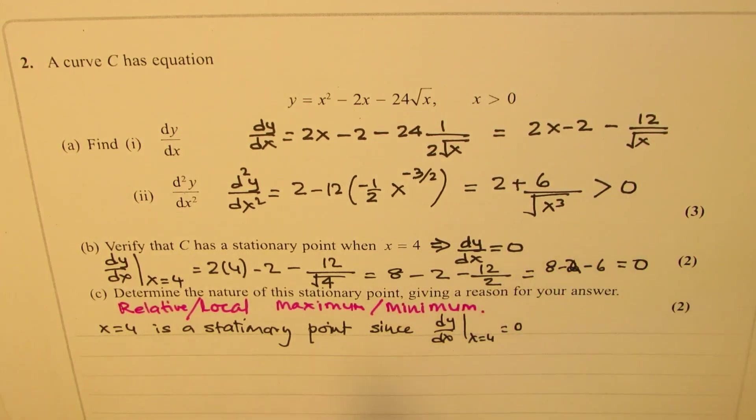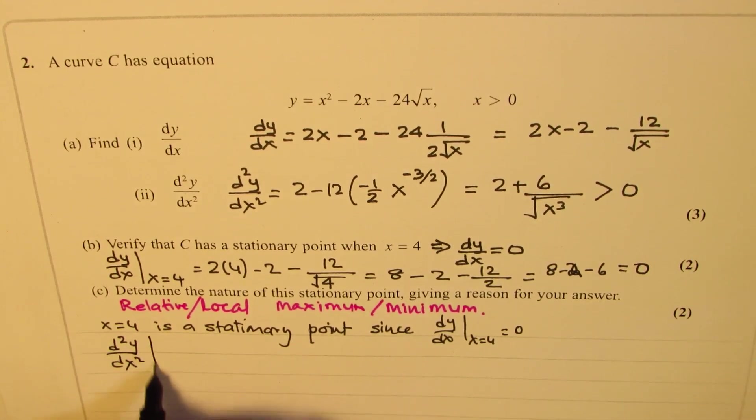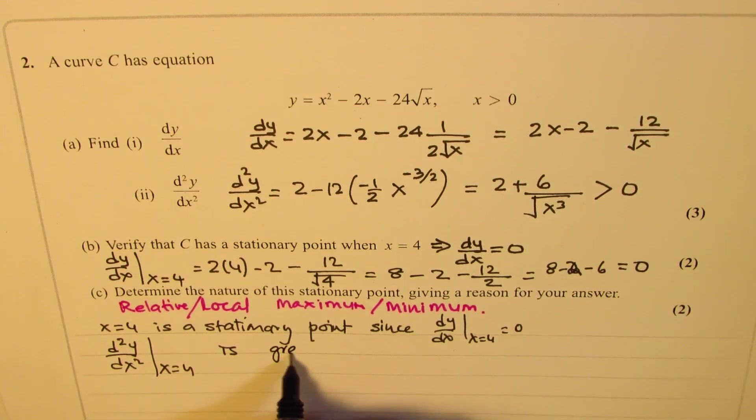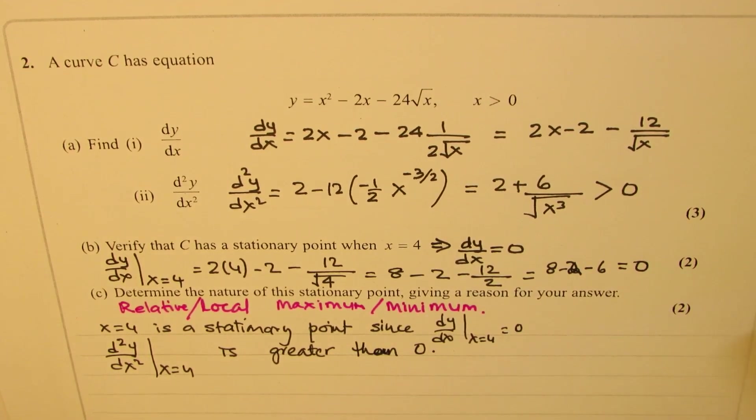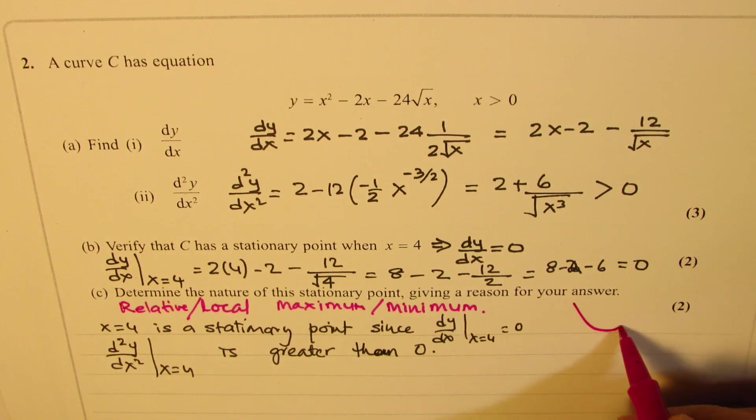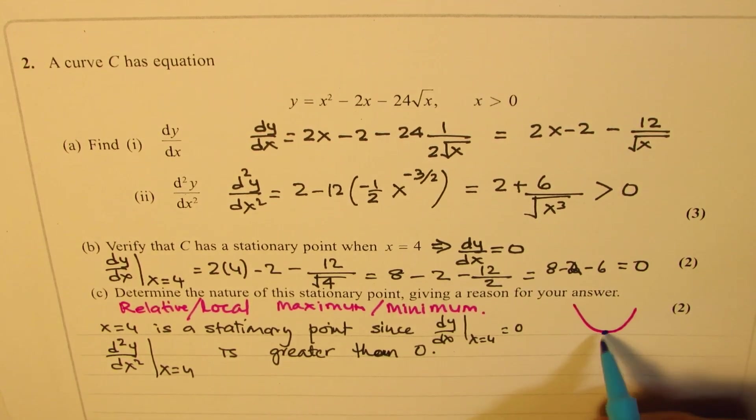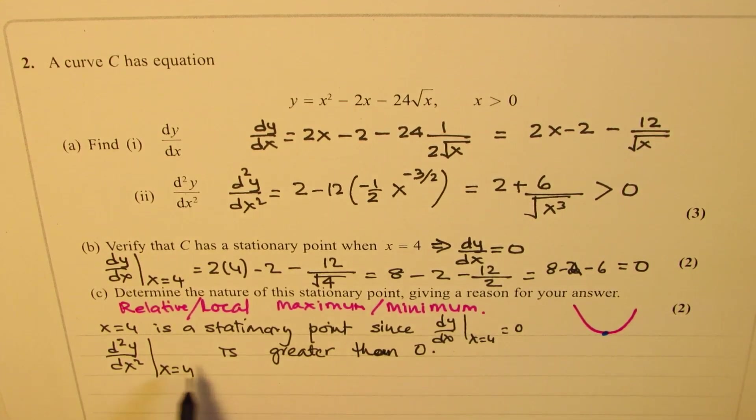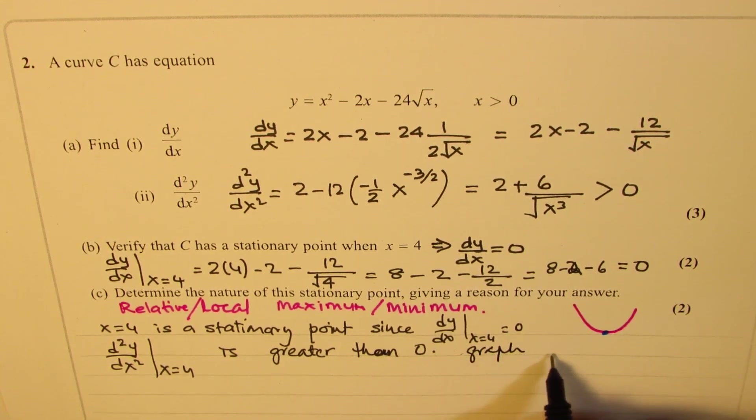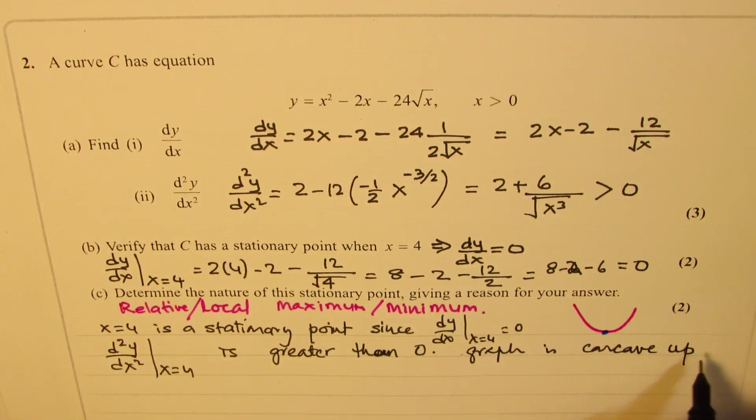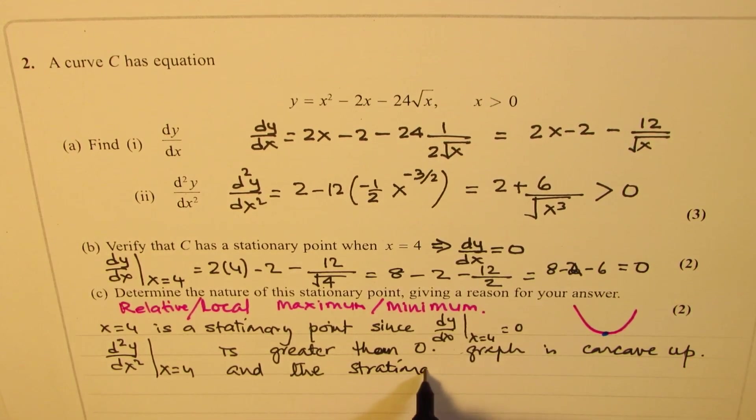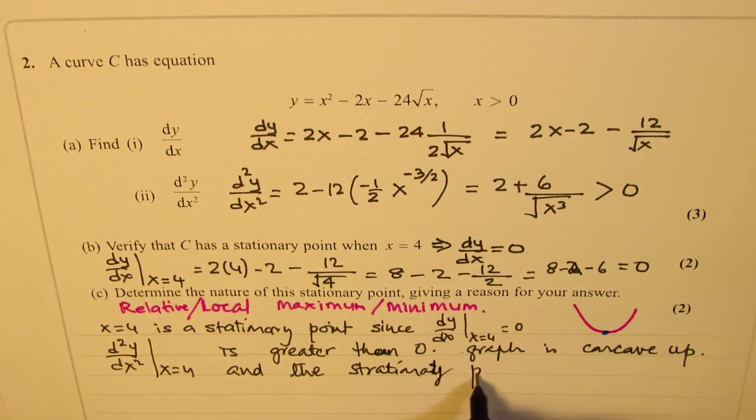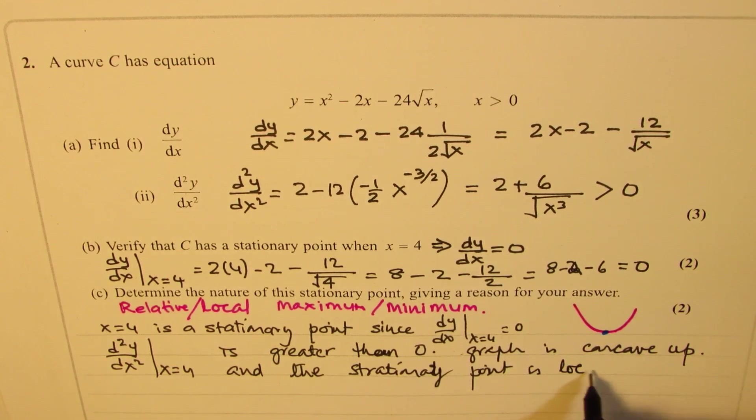So we know d²y/dx² at x equals 4 is greater than 0. That means the graph is going to be concave up. So that really means that at this point we have a local minimum. Now since that is the case, this is greater than 0, so graph is concave up and the stationary point is local minimum.